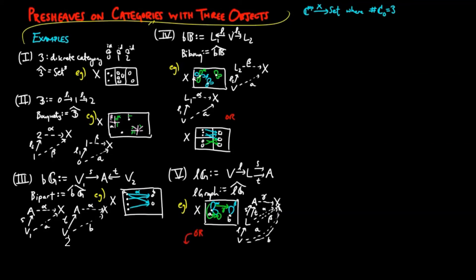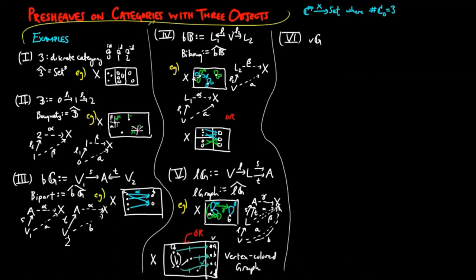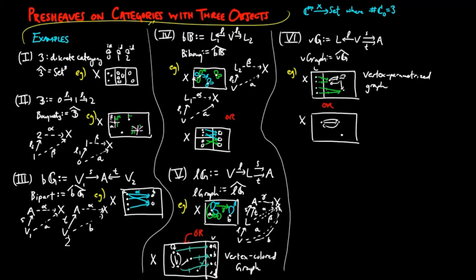One could also interpret a container as a graph where each vertex is assigned a V label. If we switch the direction of the morphism L, we get a category VG. A pre-sheave on this category is a vertex parametrized graph, where the set of L figures lists vertices in the graph. One could also view a container as a bouquet and a graph which share the same set of vertices.